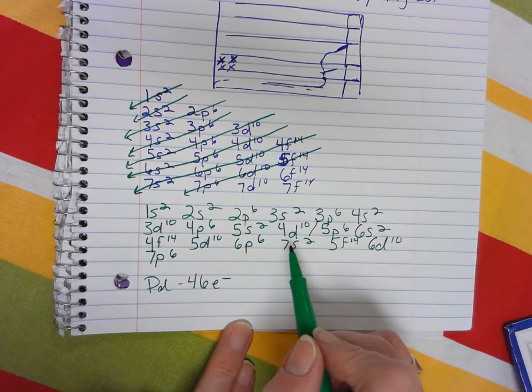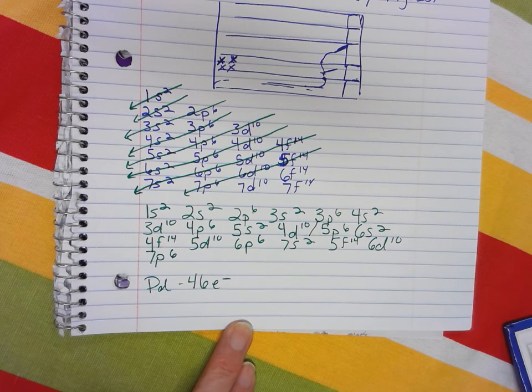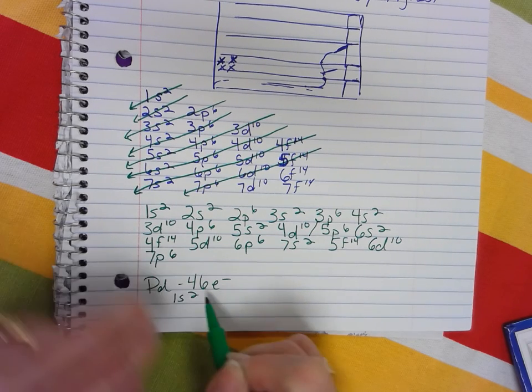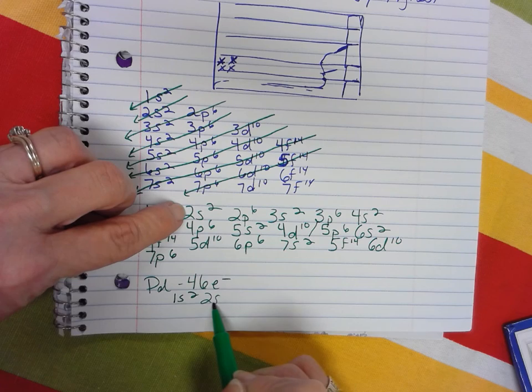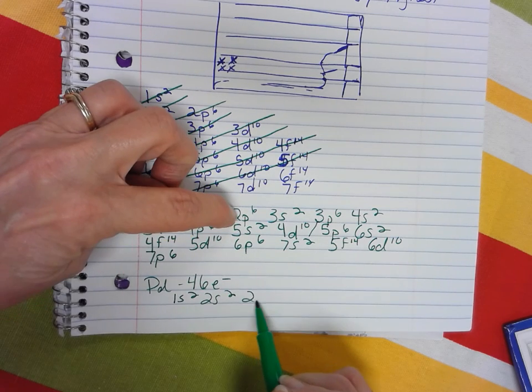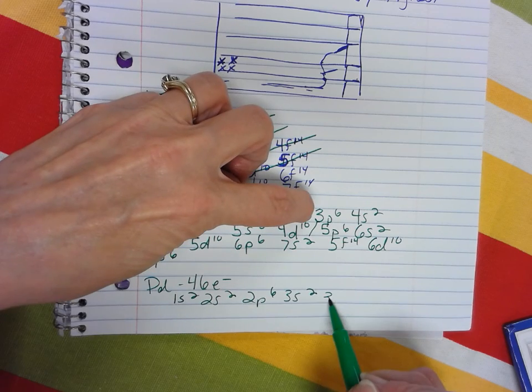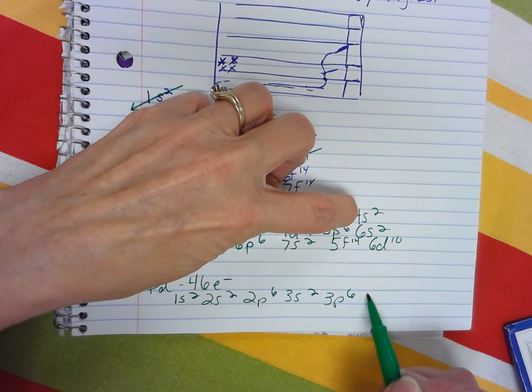So, we're going to write our electron configuration like this. 1s2, 2s2, 2p6, 3s2, 3p6, 4s2,